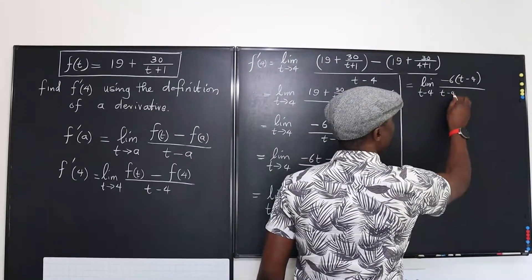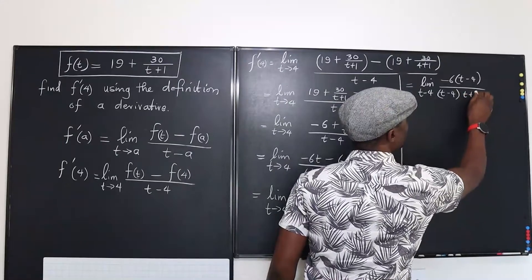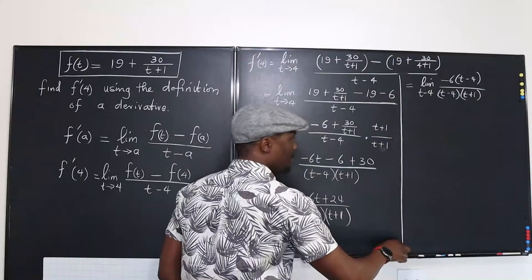So that's going to be t minus 4, t plus 1. Obviously.